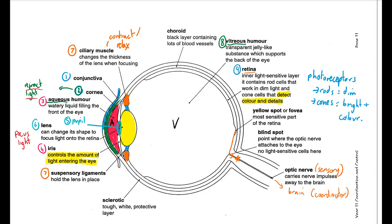The next area is the fovea, where there is the highest concentration of cones, meaning this is where we see in the most detail. When shown in a photograph of the retina it appears slightly yellow, so it's sometimes called the yellow spot. Behind the retina is the choroid, a layer that supplies blood vessels containing glucose and oxygen to the retina.